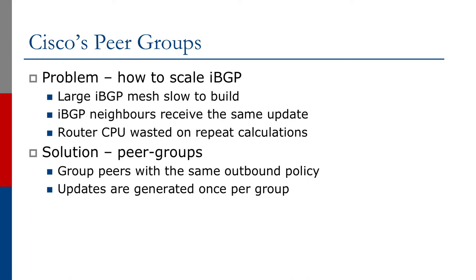One more scaling technique which Cisco has introduced for IOS is a concept called the Peer Group. This was originally introduced in the mid-90s as an aid to scaling IBGP. Earlier we talked about how route reflectors were used to scale IBGP linearly rather than the full mesh IBGP, which scaled more or less by n squared. Another aid is the Peer Group, because what this helps with is building the IBGP neighbor mesh.